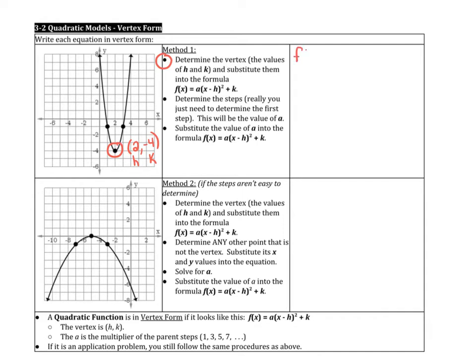So your equation is f(x) = a(x - h)² + k. That is your general formula for vertex form. So now we're going to substitute the h value and the k value in. So the h is 2, so it's x minus 2 squared, and the k is negative 4. And that's your first step.